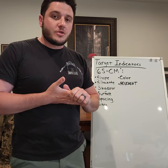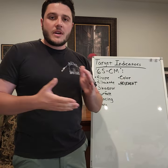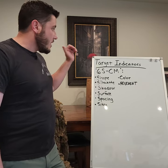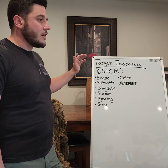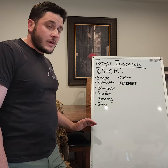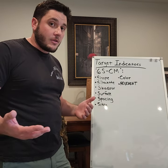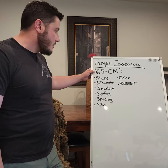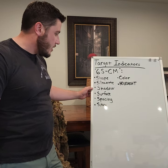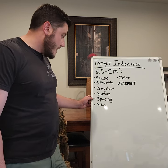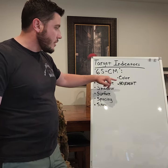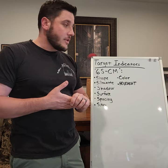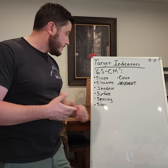Fundamentals of camouflage — you are trying not to be seen. The adversary or whoever is looking for you doesn't know you're there, and you don't want to be seen. From a sniper-observer standpoint, I go by the acronym 6SCM: shape, silhouette, shadow, surface — which really means shine — spacing, sighting, color, and movement. Those are your target indicators. Biggest one being movement.